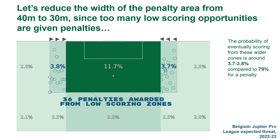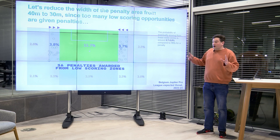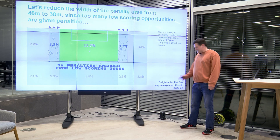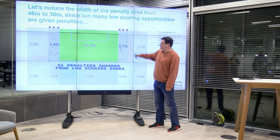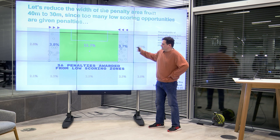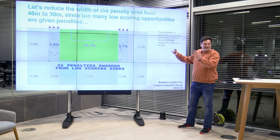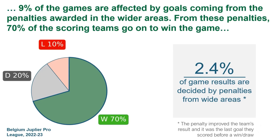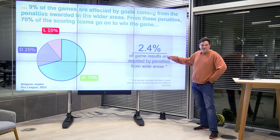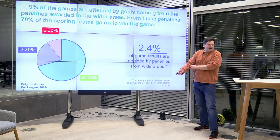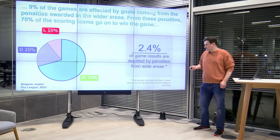So my proposal is: let's reduce the width of the penalty area from 40 meters to 30 meters, as too many low-scoring opportunities are being given penalties on the side. I used Karun's expected threat model — these are probabilities of scoring from different areas — and you can see the wide penalty areas aren't much different from anywhere else on the pitch. So I propose trimming five meters from each side. In the Belgian league season I looked at, 9% of games were affected by goals coming from those wide penalty areas, and 70% of the time the team scoring from those penalties goes on to win the game. In 2.4% of games in the whole league, that wide-area moment was the decisive moment.